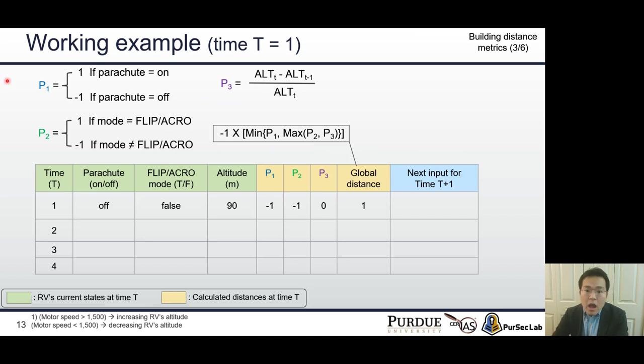From now on, I would like to explain a working example of PGFUZZ. These green color columns represent the RV's current state, such as whether the parachute is deployed or not, and altitude. These yellow color columns show calculated propositional and global distance from the RV's current state. When time T is 1, the global distance shows the positive value 1 because the parachute is not deployed so far.